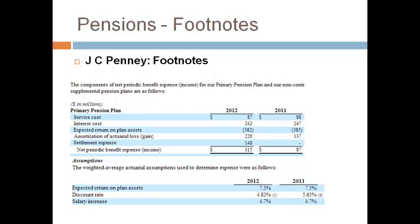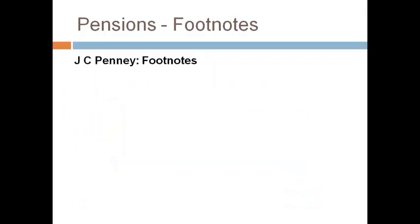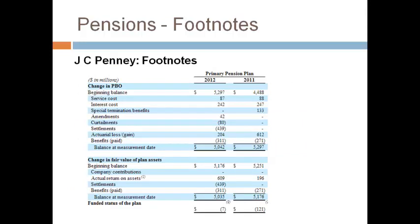Here is an example of JCPenney's footnote. You should recognize the same things that we included in pension expense when we did our calculation. The company is also required to report the changes to the pension benefit obligation and the fair market value of assets. You should notice most of the same line items included in our walk-forward of PBO and plan assets. The two net to the fund status — the amount the plan is over or underfunded — and this amount is also reported on the balance sheet.